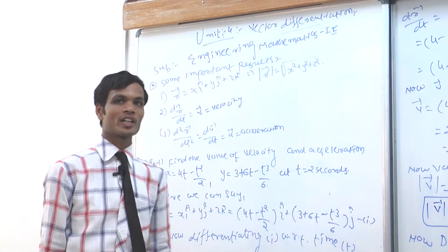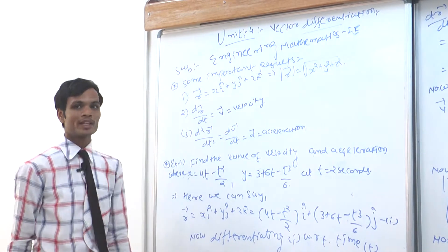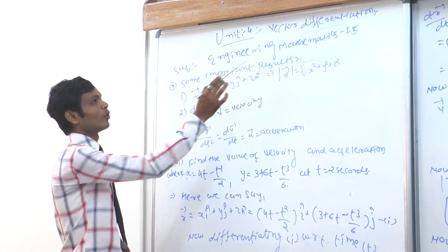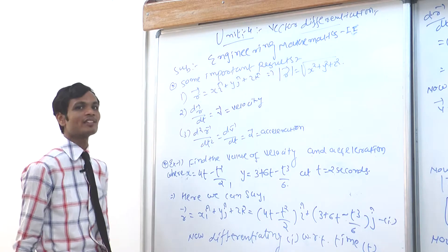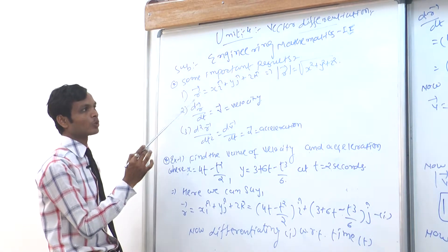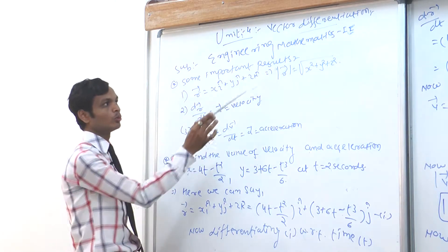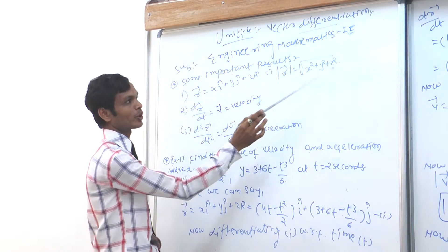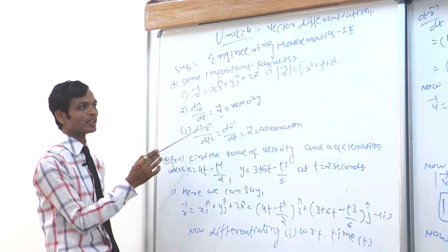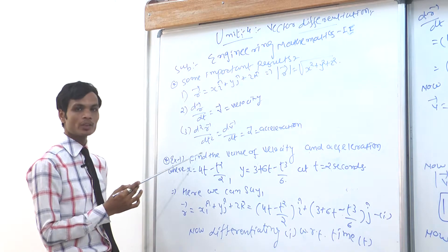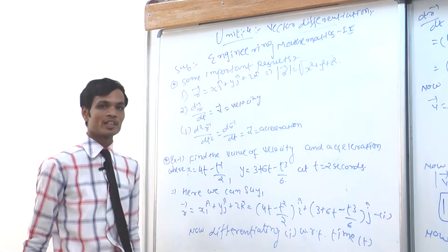Welcome. Myself Bhavya Shagyala. We will learn today Engineering Mathematics 2, Unit Number 4, Vector Differentiation. We are continuing — we have discussed some important results. R equals xi plus yj plus zk, so mod R equals under root of x² plus y² plus z². dr/dt is velocity, and d²r/dt² equals dv/dt, which is acceleration — we discussed this in the previous lecture.